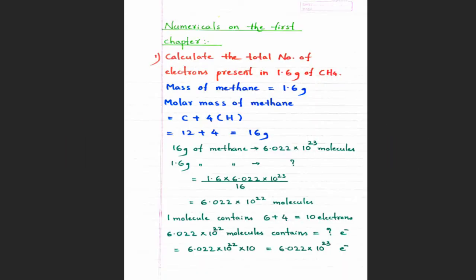Numerical number one: Calculate the total number of electrons present in 1.6 grams of methane. That means, in 1.6 grams of methane, how many electrons are there in that sample? This can be done using the mole concept or Avogadro's theory. For that, we require the gram molecular mass of methane. So first, this is the mass given, and we have to calculate the molar mass.